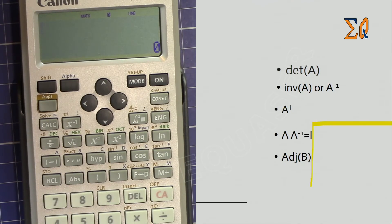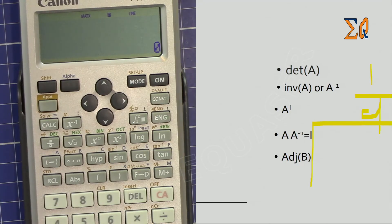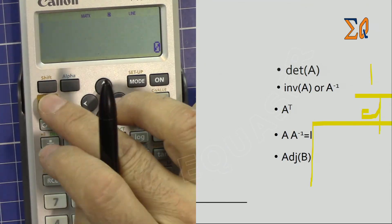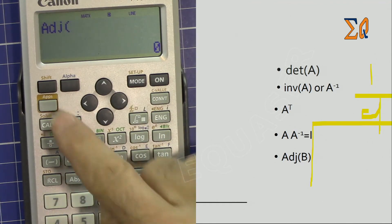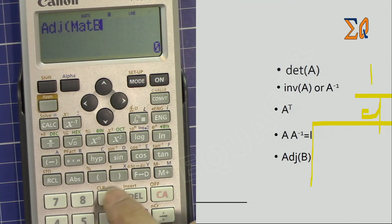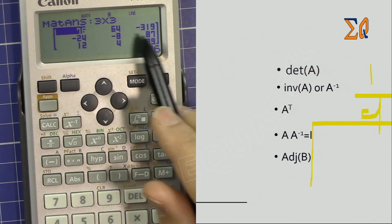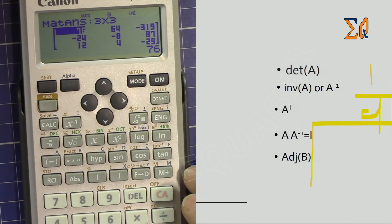Sometimes you need the adjoint of a matrix — for example, when computing the inverse manually as one over the determinant times the adjoint. To get the adjoint, press Apps, then select adjoint number four, and bring the matrix you want, such as matrix B by pressing number four. Press equal to get the adjoint of that matrix on the Canon F789SGA calculator.